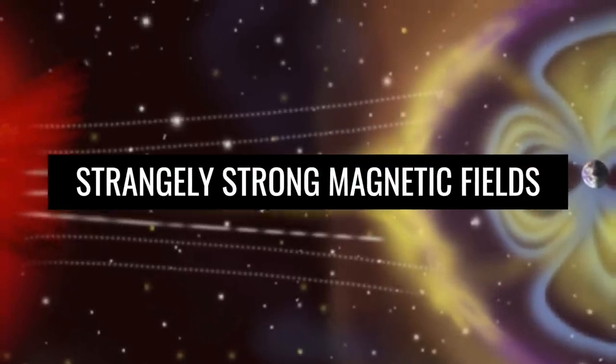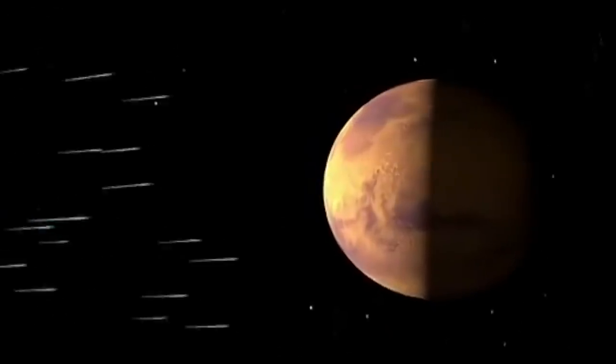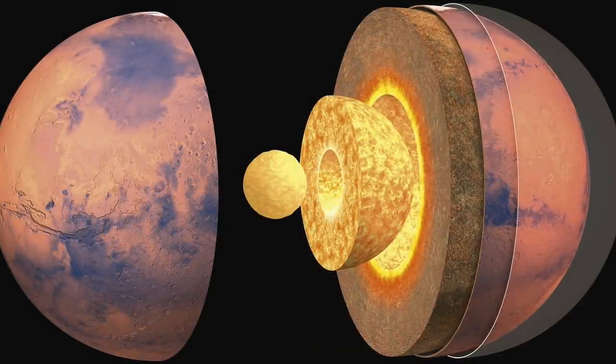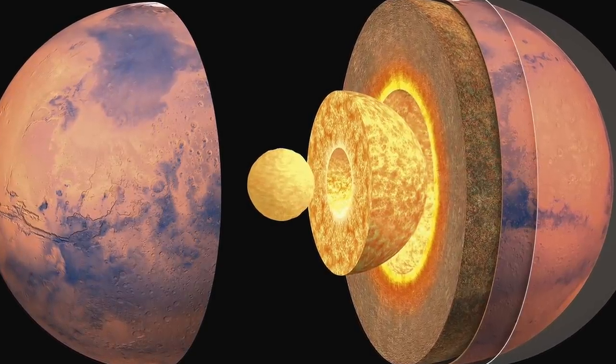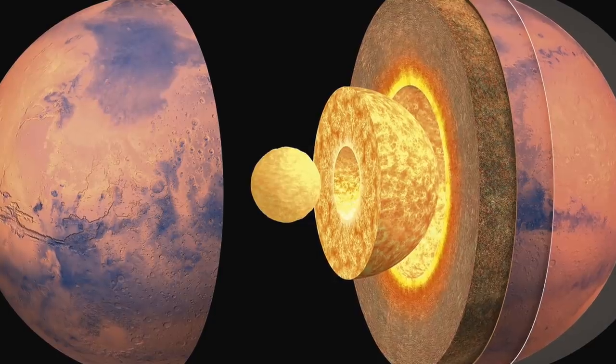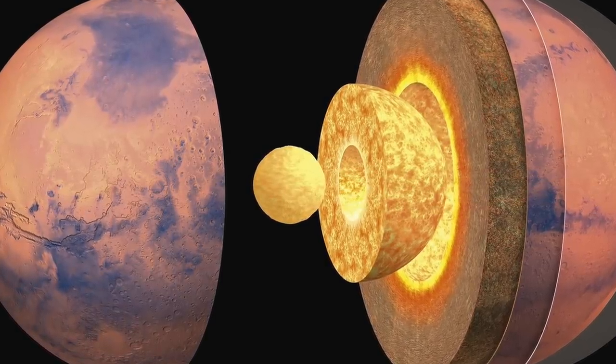Billions of years ago, Mars had a magnetic field. It no longer exists, but it has left ghosts behind and magnetized old rocks, which are now between 61 meters and several kilometers below the planet.